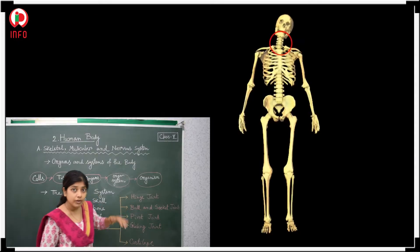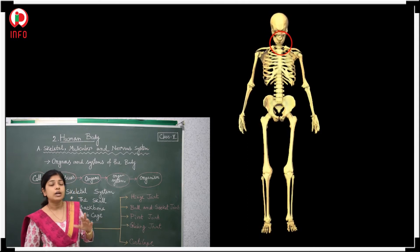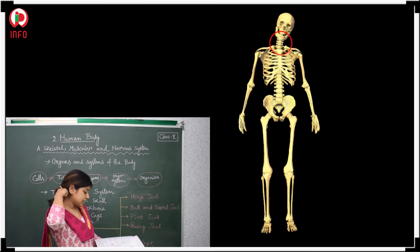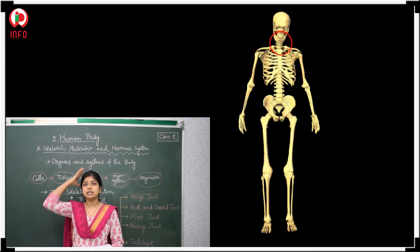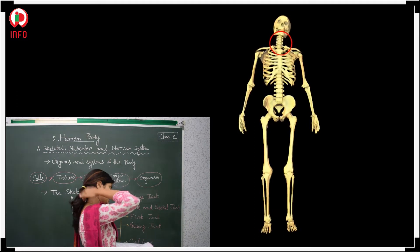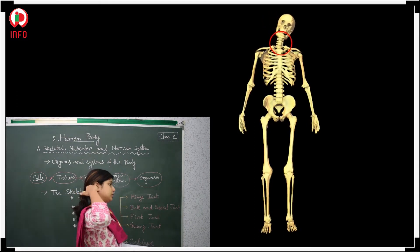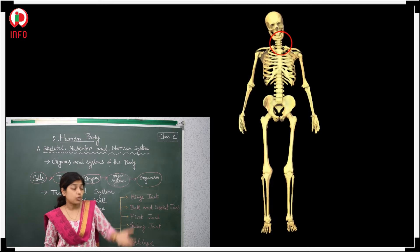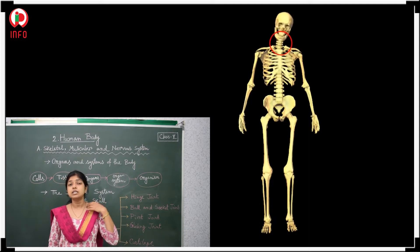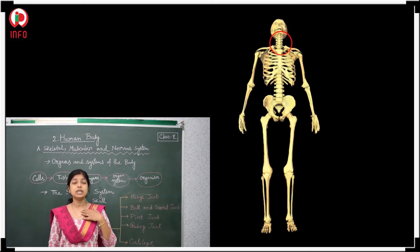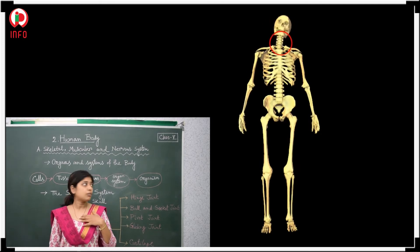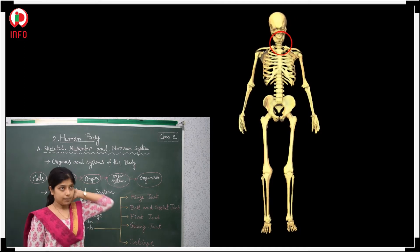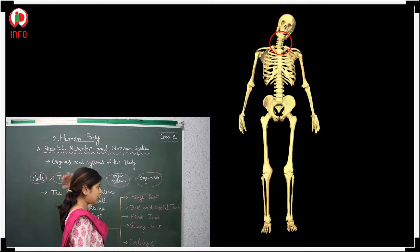Now, the pivot joint. The pivot joint is located in our vertebrae — between the skull and the vertebrae. This is the vertebrae, and this is the skull; the pivot joint is available here. What is the role of the pivot joint? It allows us side-to-side and up-and-down movement. So this kind of joint is located between our skull and the vertebrae.